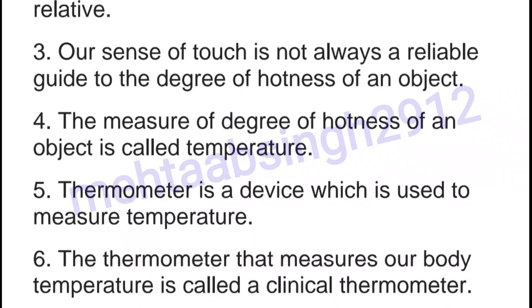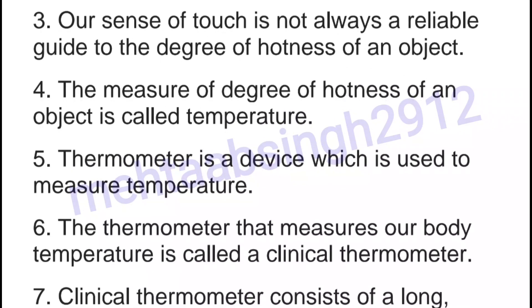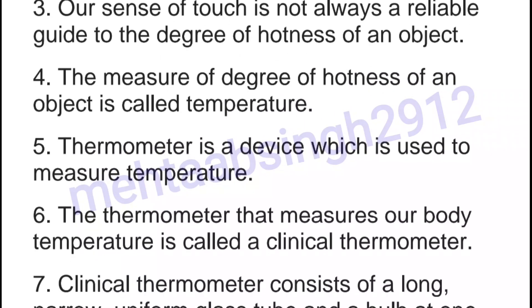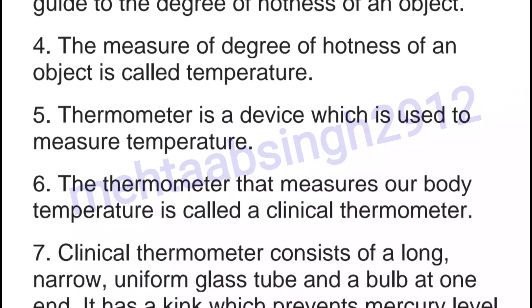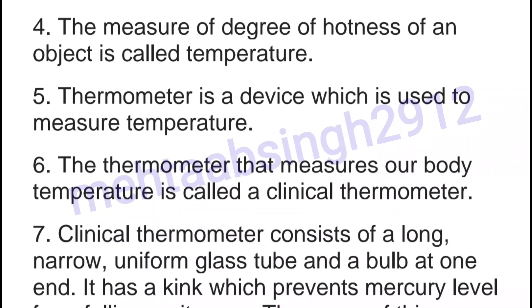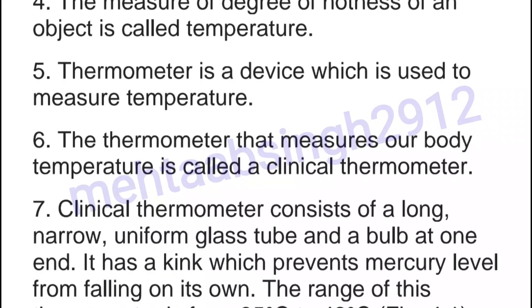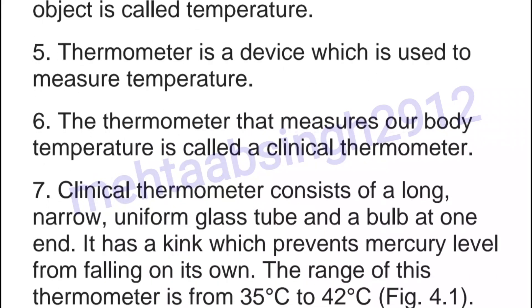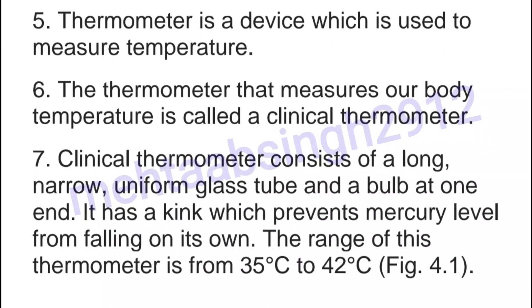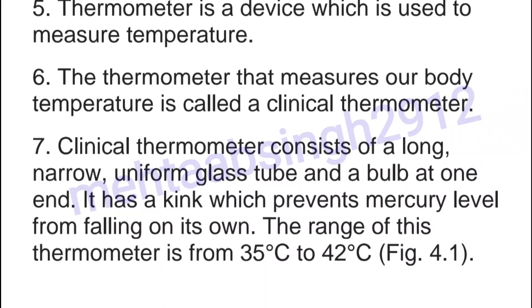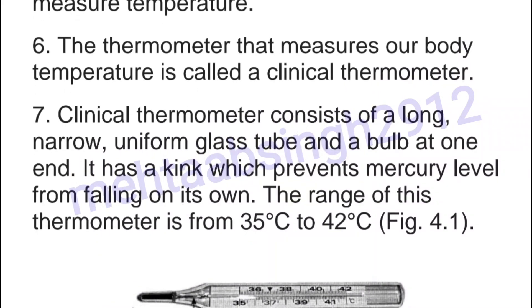Fourth, the measure of degree of hotness of an object is called temperature. Fifth, a thermometer is a device which is used to measure temperature. Sixth, the thermometer that measures our body temperature is called a clinical thermometer. Seventh, a clinical thermometer consists of a long, narrow, uniform glass tube and a bulb at one end. It has a kink which prevents the mercury level from falling on its own.